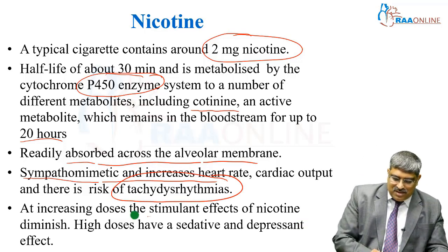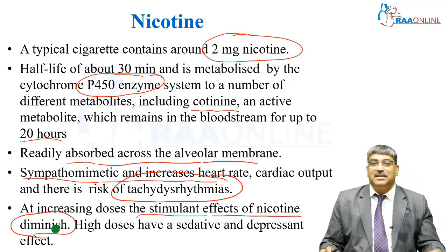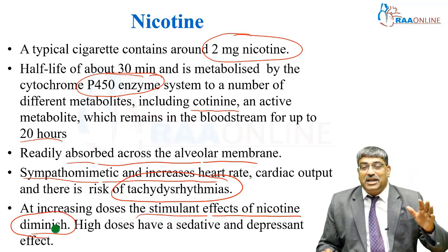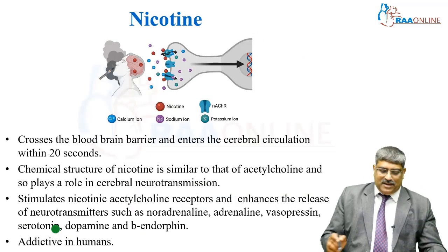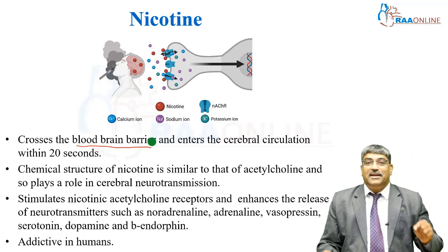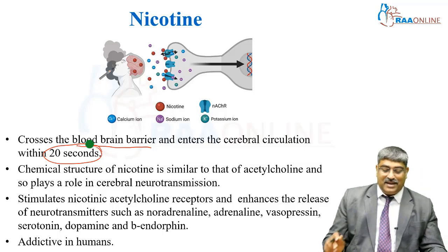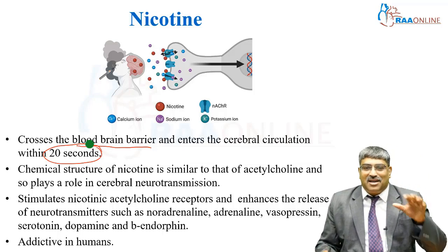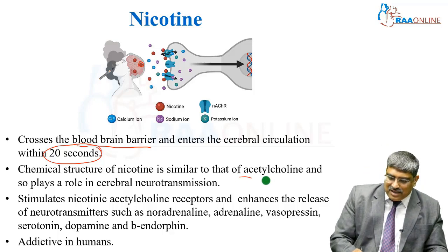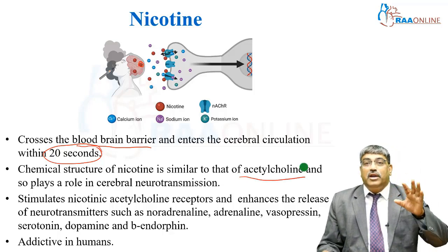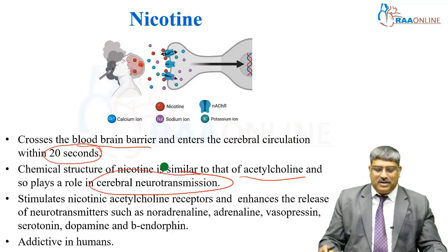At higher doses, the stimulant effect of nicotine decreases. High doses have a sedative and a depressant effect. Not only that, it crosses the blood-brain barrier and enters the cerebral circulation within 20 seconds. The chemical structure of nicotine, which is red in colour, is very similar to acetylcholine. Therefore, it plays a very important role in cerebral neurotransmission.